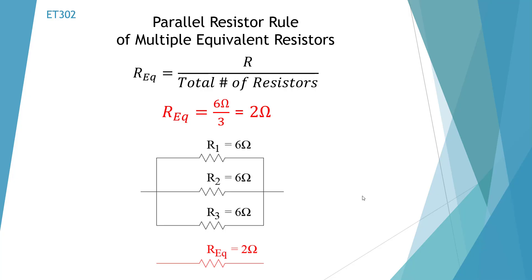Here's another rule. Same rule but with just another example. And we have 3 6 ohms. And 6 ohms divided by 3 is going to be 2 ohms. So our equivalent resistance is going to be 2 ohms.